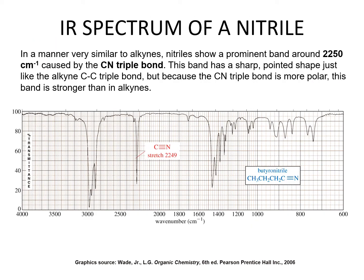In a manner very similar to alkynes, nitriles show a prominent band around 2250 centimeters to the minus one caused by the carbon-nitrogen triple bond. This band has a sharp pointed shape, just like the alkyne carbon-carbon triple bond, but because the carbon-nitrogen triple bond is more polar, this band is stronger than in alkynes.